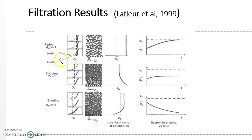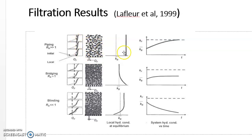This diagram shows the difference between the clogging phases: piping, breaching, and blinding. Piping is a failure case where the filter does not meet the retention criteria. Most fine particles initially start from the original grain size distribution, but all fine particles in the upstream area pass through the filter media. The void ratio increases and hydraulic conductivity increases toward the filter media, so it fails the retention function of the filter.